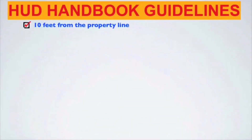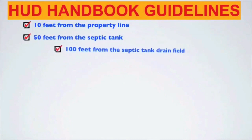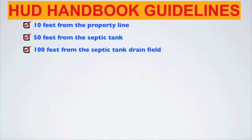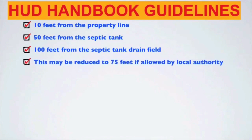HUD handbook guidelines require the following minimum distance requirements between wells and sources of pollution for existing construction: 10 feet from the property line, 50 feet from the septic tank, and 100 feet from the septic tank drain field — but this may be reduced to 75 feet if allowed by local authority.